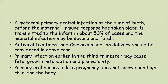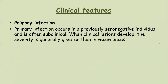Primary infection earlier in the third trimester may cause fetal growth retardation and prematurity. Primary oral herpes in late pregnancy does not carry such risk for the baby. Both primary infection at the time of birth and in the third trimester require treatment with antivirals. Clinically, primary infection occurs in previously seronegative individuals and is often subclinical. When clinical lesions develop, the severity is generally greater than in recurrences.